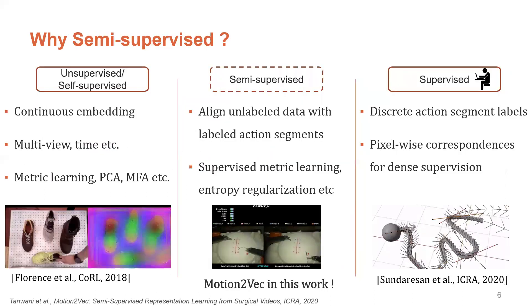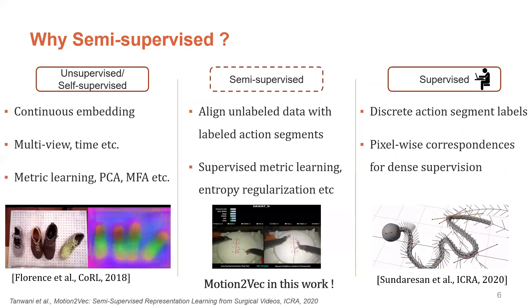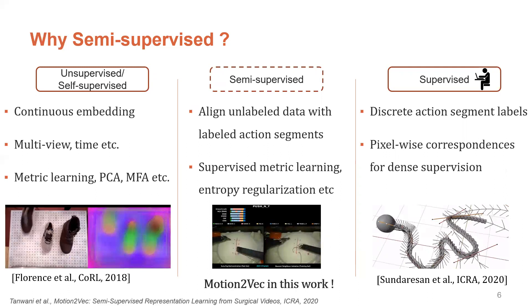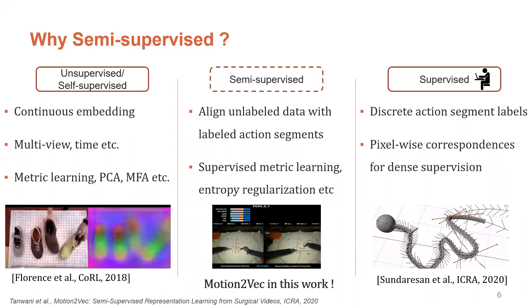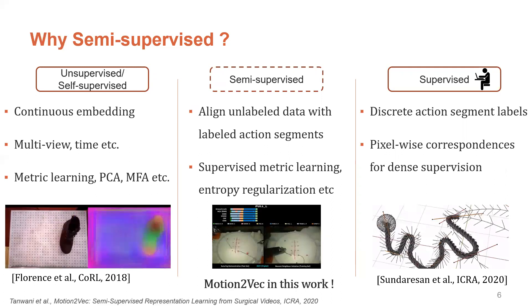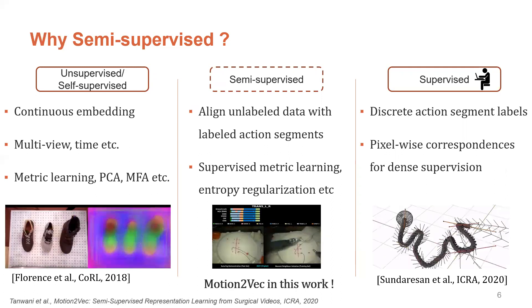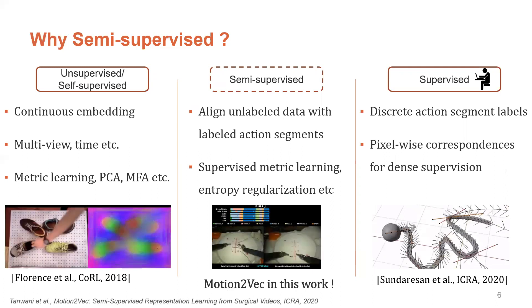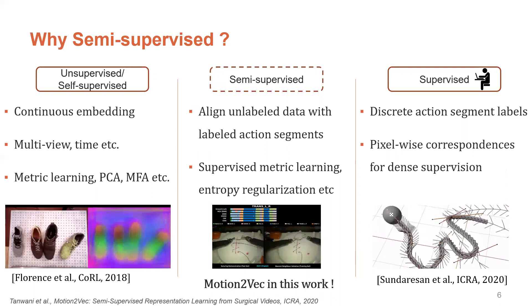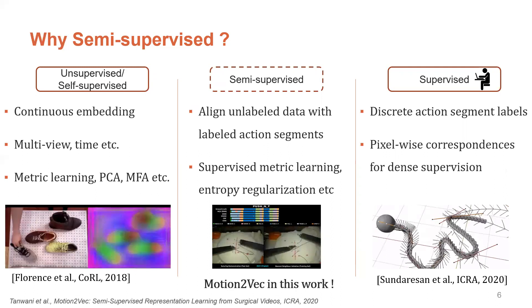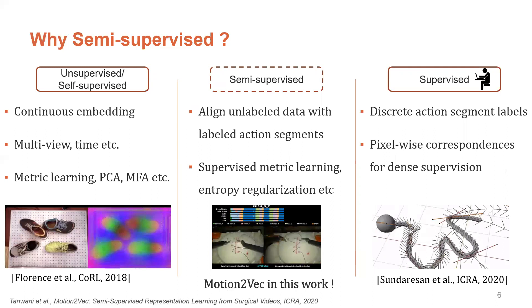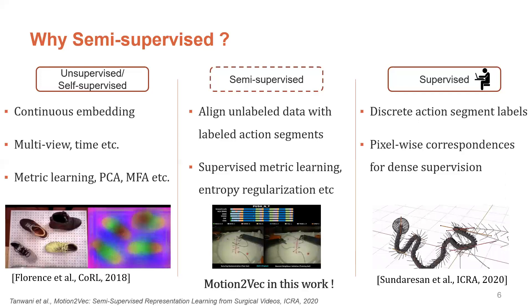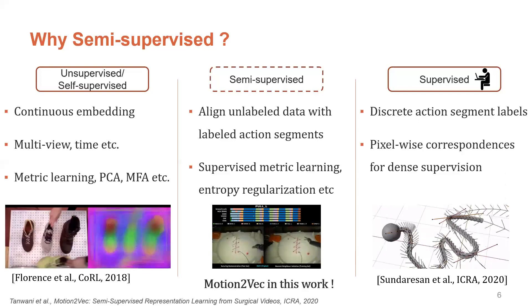On one end of the spectrum, we have self-supervised approaches that yield continuous embeddings using multiple views or time as an underlying signal. Continuous embedding, however, can confound real segments. On the other hand, supervised approaches rely on explicit discrete action segment labels such as reach, grasp, or pixel-wise dense labeling of objects for manipulation. Motion-to-Vec encodes observations with weak supervision using a small set of action segment labels and combines it with unlabeled data that allows better generalization and interpretability in new situations.